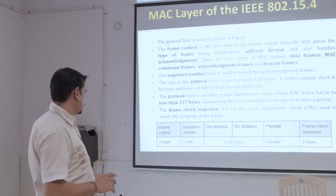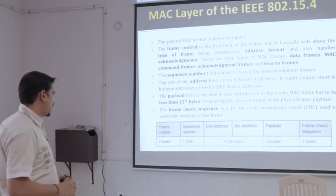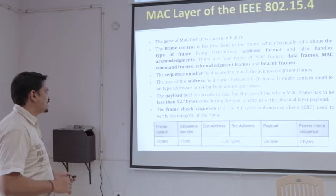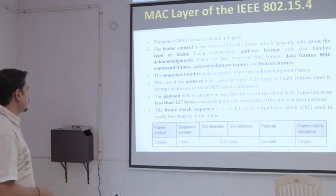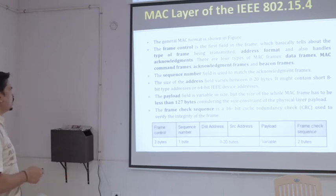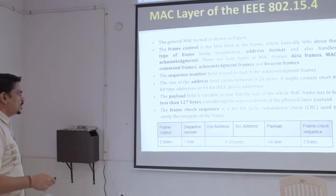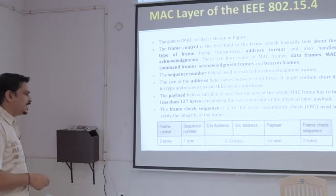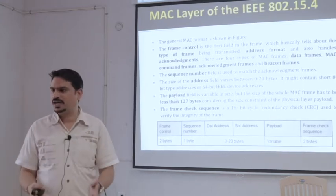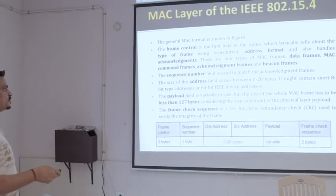The MAC packet frame also has some bytes allocated. There is: frame control, sequence control, destination address, source address, payload, and frame check sequence. Let's go through them one by one. Frame control is the first field of the frame, which basically tells about the type of frame being transmitted, the address format, and handles acknowledgement. The frame control field tells what type of frame or what type of data we are sending through the MAC protocol. It is two bytes.